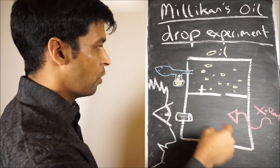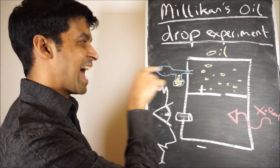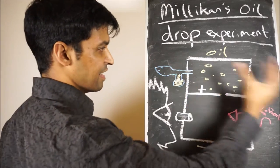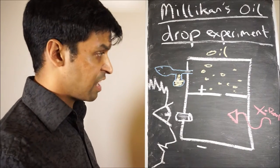These are drops of oil and they're dispersed by this atomizer. An atomizer is something like you'd have for perfume. You squeeze it and it turns into different sized drops.